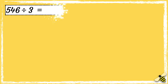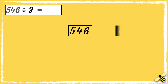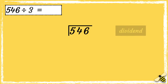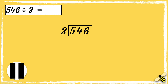Let's have a look at one more example: 546 divided by 3. First, we need to draw our bus stop. We put the number that we are dividing — the dividend — inside the bus stop. We put the number that we're dividing it by — the divisor — next to the bus stop. If you have a pen and paper to hand, pause the video and have a go at working out the answer. Write your answer in the comment section below.